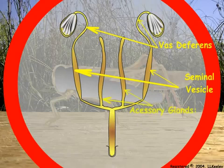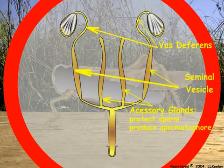Male accessory glands produce products that mix with the sperm to protect and preserve it. Some insect species produce a spermatophore that encloses the sperm and is passed to the female during mating, while other insects transfer sperm without a spermatophore.